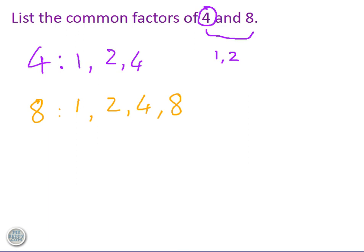So we simply then look for the ones that they have in common. 1 and 1, 2 and 2, 4 and 4. So the common factors of 4 and 8 are 1, 2 and 4. Okay? Remember to check whether one of the two numbers could also be a common factor.